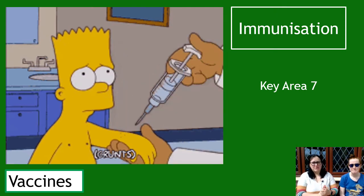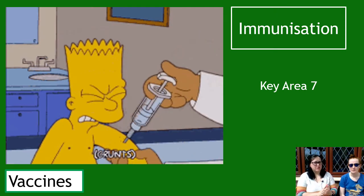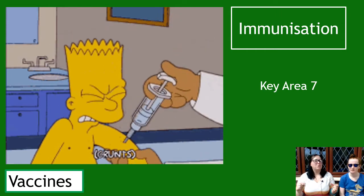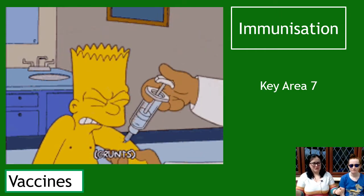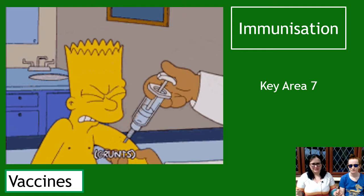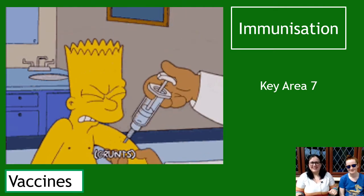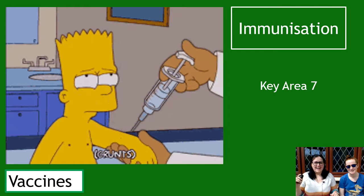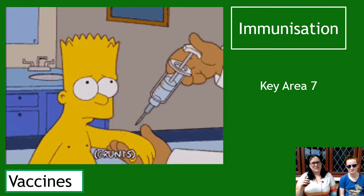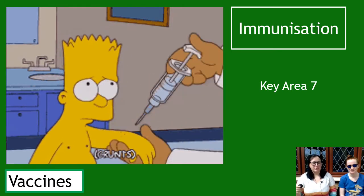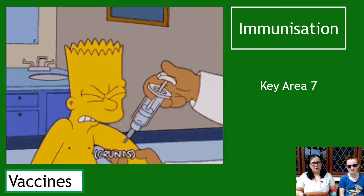This is Unit 3 Immunology and Neurobiology, and we're in the Immunology section. This is KR7 — we are almost done of the Higher Human Biology course. We're on to immunization. This first section is about vaccines, and the second section is going to be about vaccine programs.